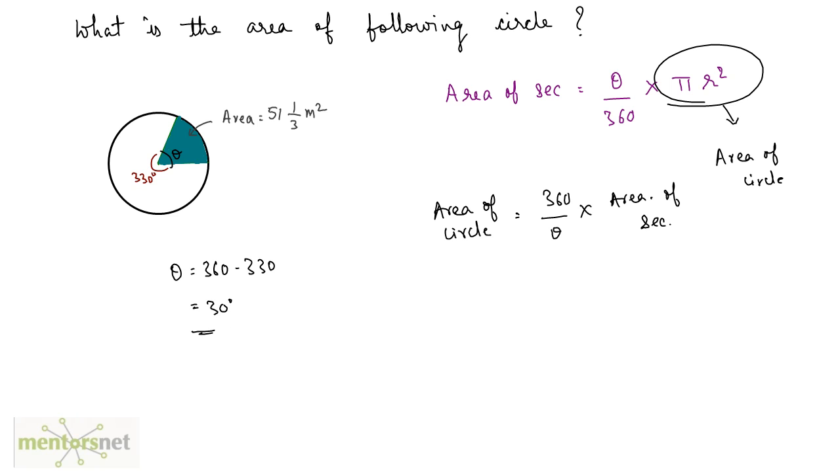So we've got the value of theta. So this is equal to 360 by 30 times the area of sector is given, 51 and 1 by 3. And that will be equal to 51 times 3 plus 1. And that is 154 by 3.